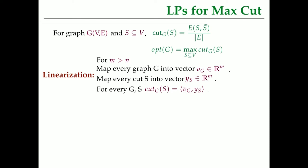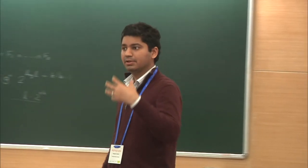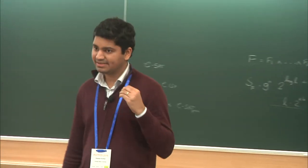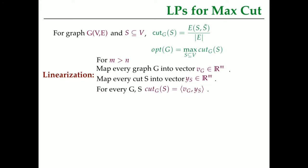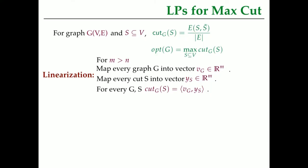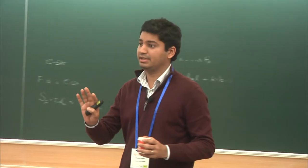For any mapping of the graph G into a vector V sub G, and for any mapping of cuts S into some vector Y sub S, I can define an objective V_G dot Y_S, which stands for the value of the cut defined by the set of vertices S in the graph G. In the previous slide, V_G was the indicator vector of the edges, and Y_S was the zero-one indicator of IJ being cut for any given X. This should hold for every graph — I'm trying to construct a linearization for all possible graphs and all possible cuts of a fixed size at once.